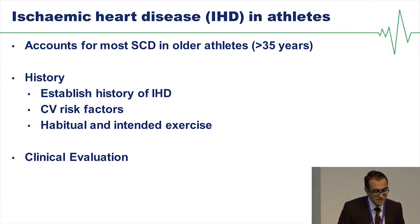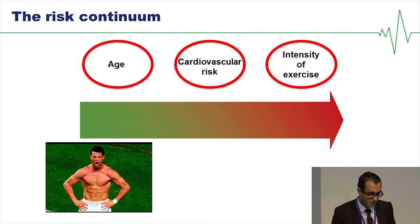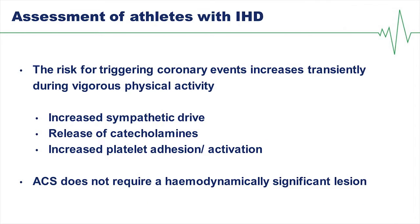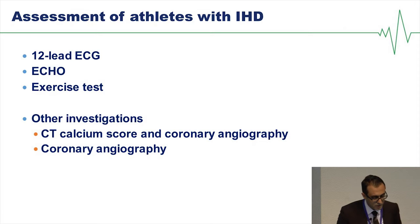Moving on to ischemic heart disease in athletes — this accounts for most cardiac pathology in the older athlete. It's important to establish risk factors for ischemic heart disease in those who want to exercise, using the usual clinical evaluations. This is important because the clinical spectrum can range widely — it's essential to establish a variety of baseline factors when assessing an athlete's risk. Vigorous physical activity can trigger coronary events through increased catecholaminergic surges and increased likelihood of thrombosis. Baseline investigations should include ECG, echocardiography, and a functional test.